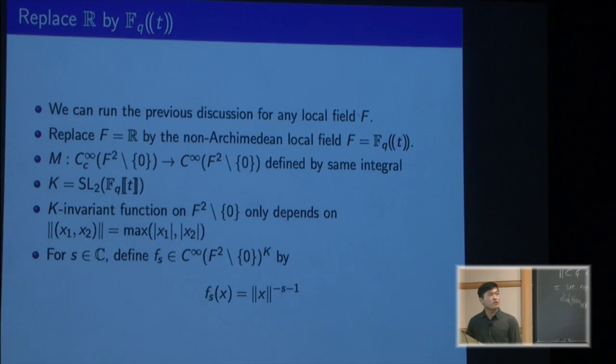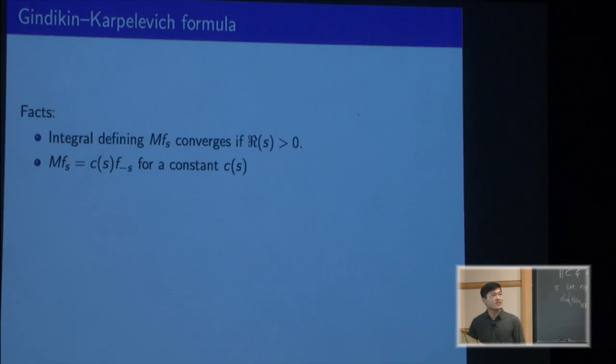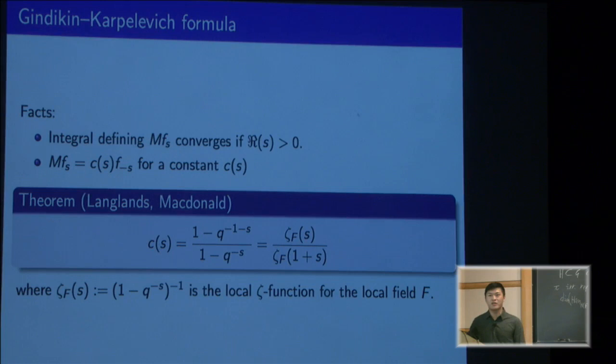We can still define these special functions F_s, which are just characters in the same way. We have the same facts: it'll converge as long as the real part of s is greater than 0, and it still sends a character to a multiple of a character. Now we have a non-archimedean version of the Gindikin-Karpelevich formula, which is a theorem proved independently by Langlands and Macdonald. It's going to be a rational function in q to the minus s.